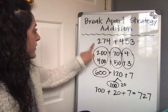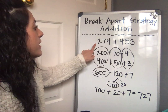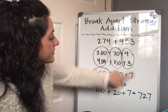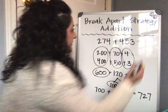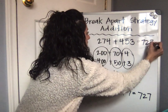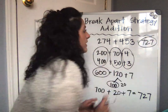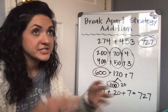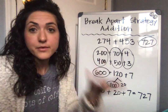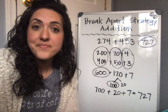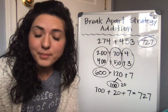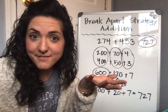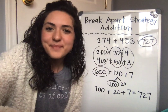So the answer to my equation, 274 plus 453, is 727. Again, you can solve using this strategy with any three-digit numbers that you can come up with in your head. I hope that you have a great rest of your day learning math. I'll see you soon. Bye.